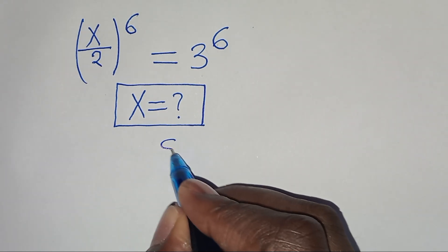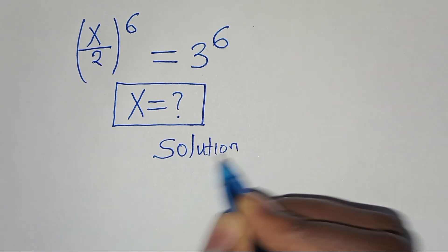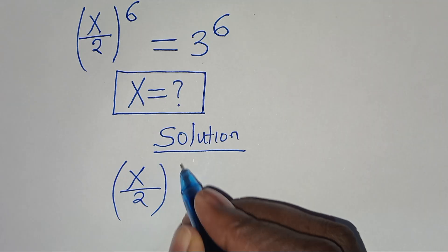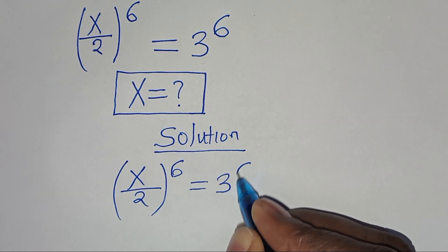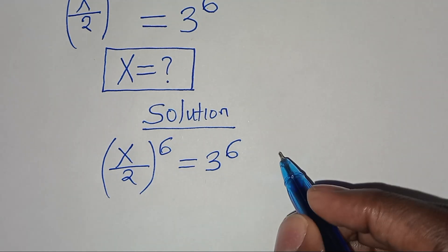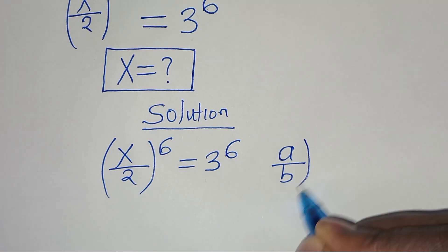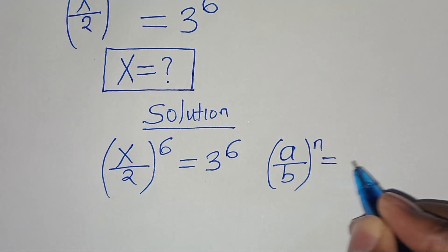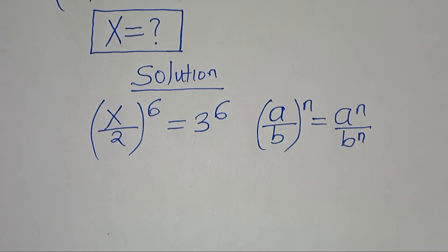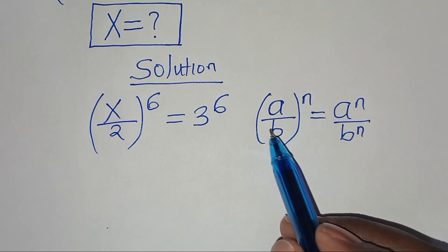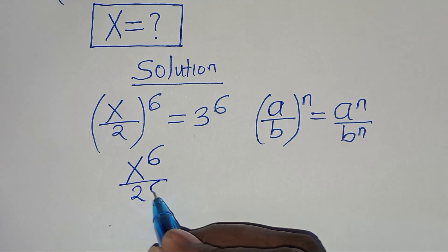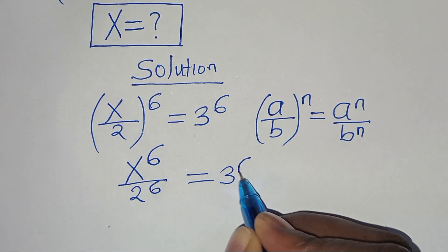Let's provide a solution. We have x over 2 raised to the power of 6, equal to 3 to the power of 6. Now x over 2 to the power of 6 is in the form of (a/b) raised to the power of n, which we can express as a^n divided by b^n. Applying this property, we have x^6 divided by 2^6, equal to 3^6.